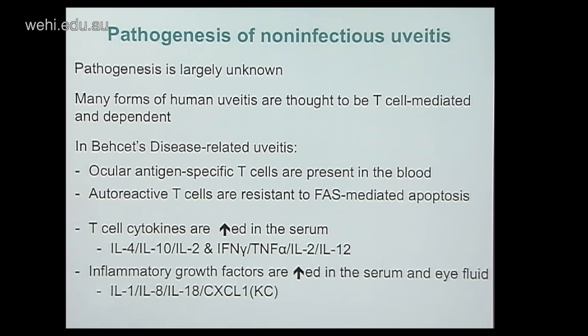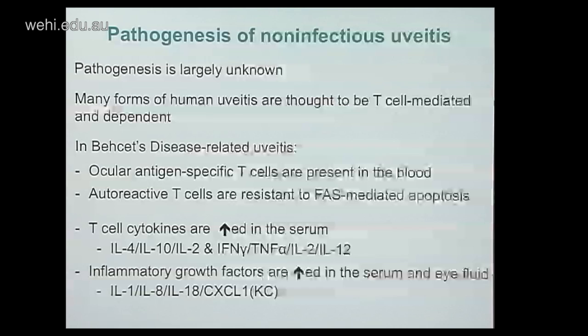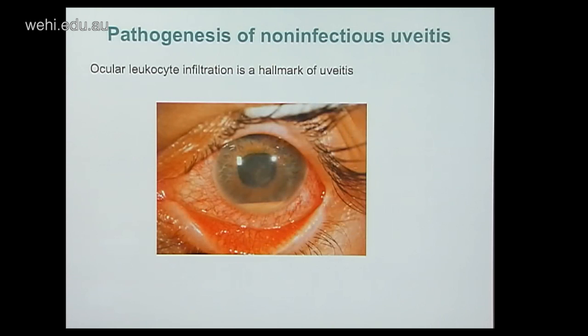The pathogenesis of non-infectious uveitis is largely unknown. Many forms are thought to be T-cell mediated. One of the most well-studied forms is uveitis associated with Bechet's disease, where we see ocular antigen-specific T cells in the blood — most often targeting retinal S antigen. These autospecific T cells are resistant to apoptosis. T cell cytokines are increased in serum, both TH1 and TH2, along with inflammatory growth factors including IL-1, IL-8, IL-18, and CXCL1.